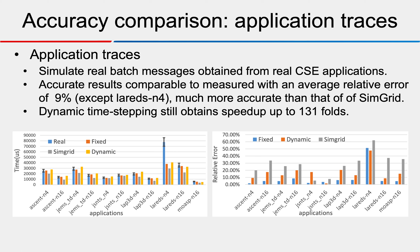Finally, we evaluate application traces by simulating real batch messages obtained directly from real CSE applications. We have nine application traces. We obtain very accurate results compared to measured results with an average relative error of nine percent, except for NAMD S4. SimGrid has a much worse relative error than ours. Dynamic time stepping does slightly increase the relative error, but within an acceptable bound of under 20 percent, while still achieving speed-up of up to 131-fold.